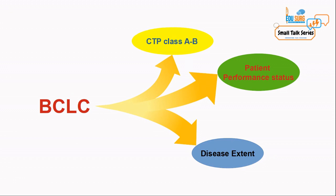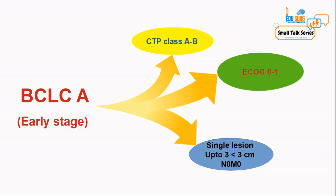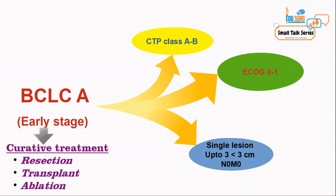When the same criteria are applied but now the Child-Pugh class is A or B, performance status is ECOG 0 or 1, and the TNM changes such that there is a single lesion of any size or up to 3 tumors each less than 3 centimeters in size, node negative and no metastasis — then this comes under BCLC A, or early stage disease. Curative treatment is again possible, determined based on portal hypertension, bilirubin levels, and ascites, in the form of resection, liver transplant, and ablation.